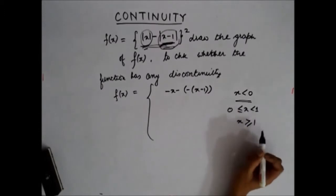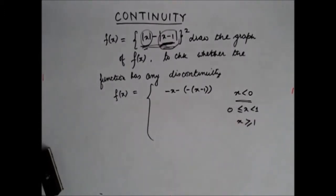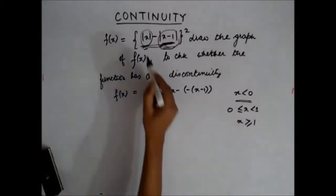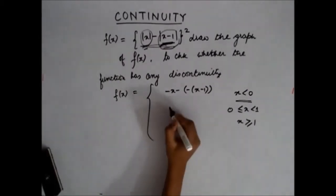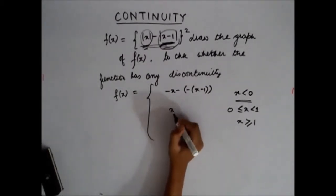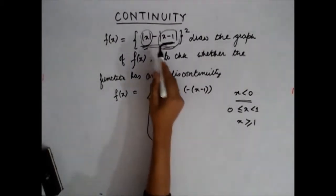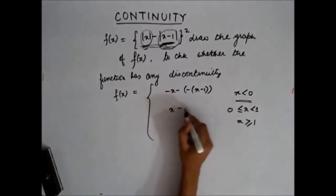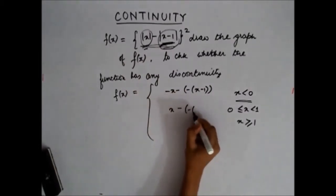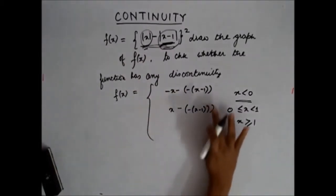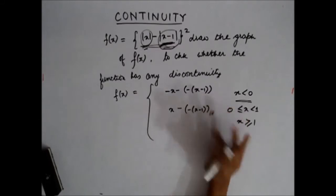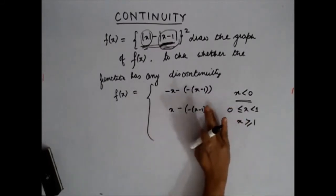When x lies between 0 and 1, mod of x is positive, so I write it as x. And x minus 1 is negative, so mod of x minus 1 becomes minus 1 times x minus 1.